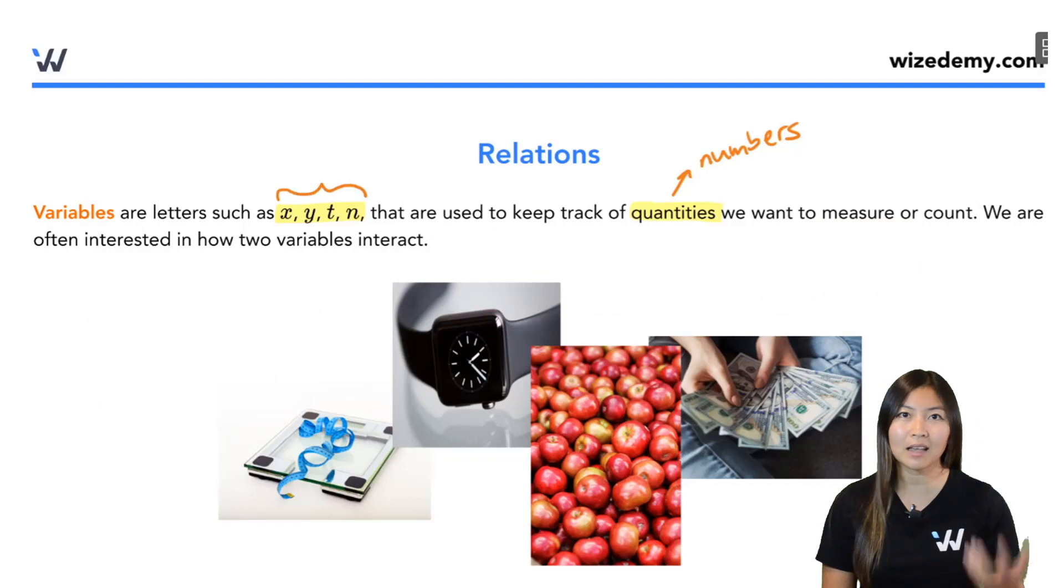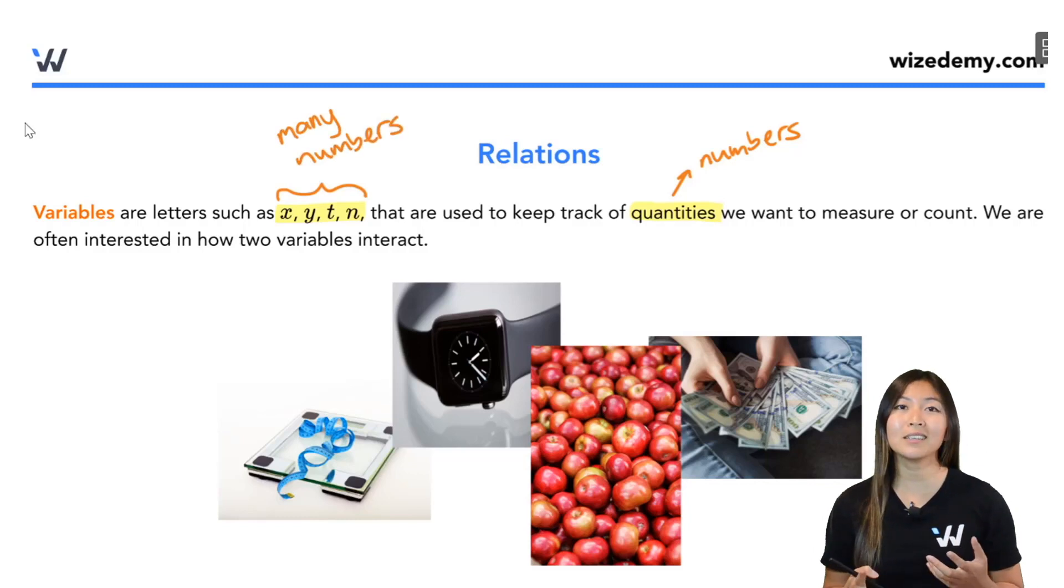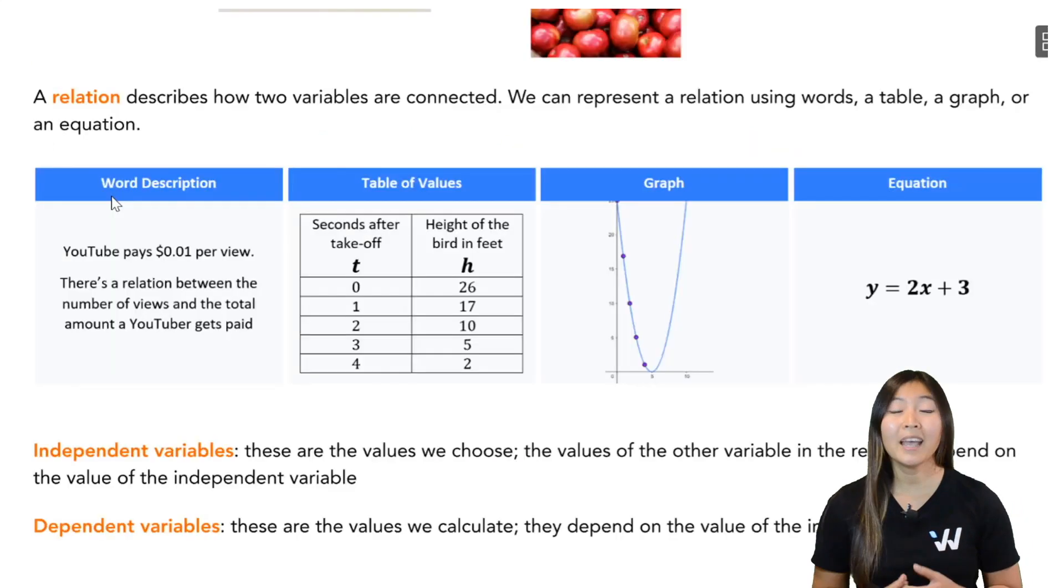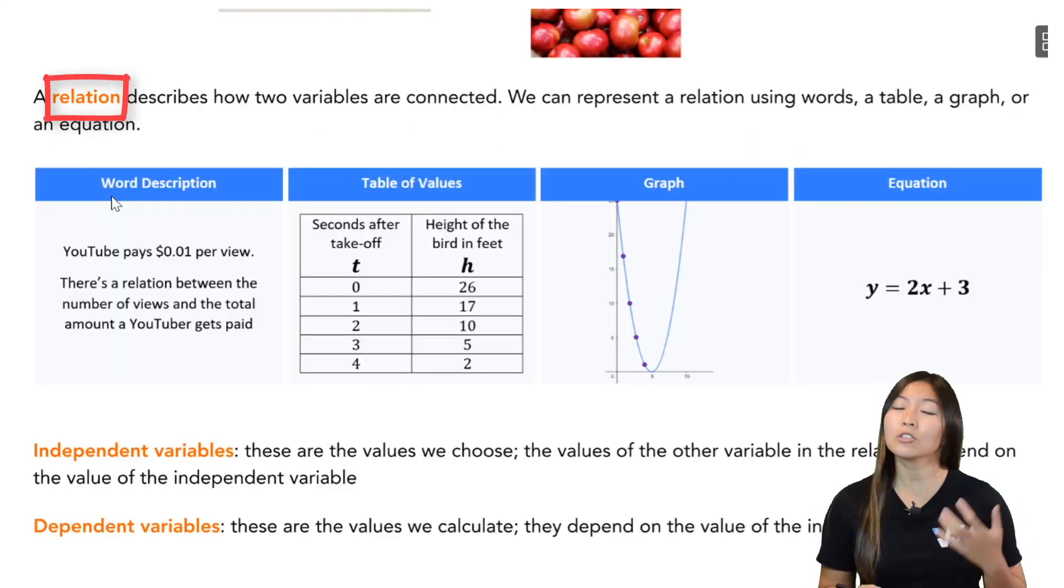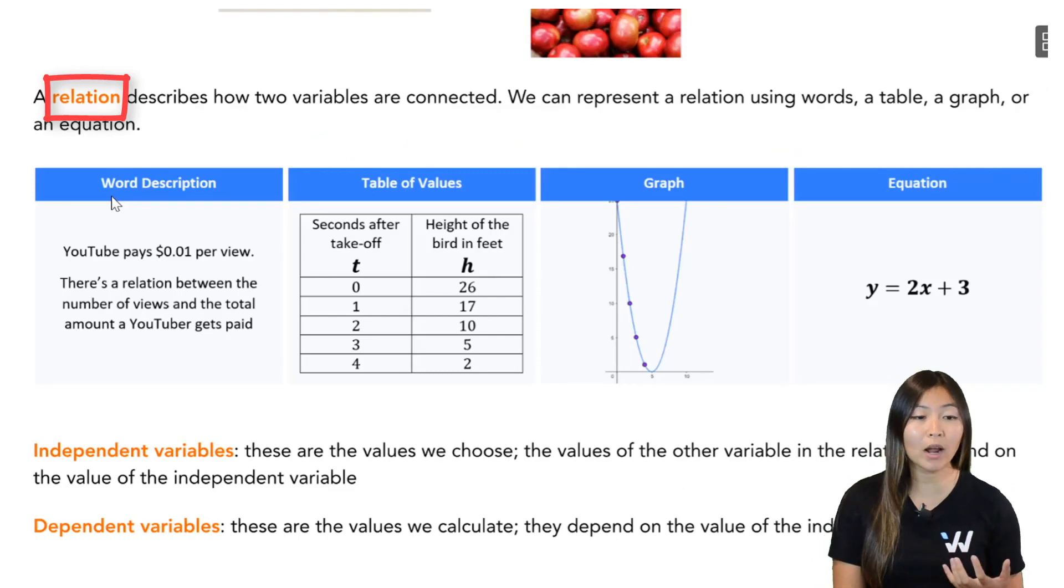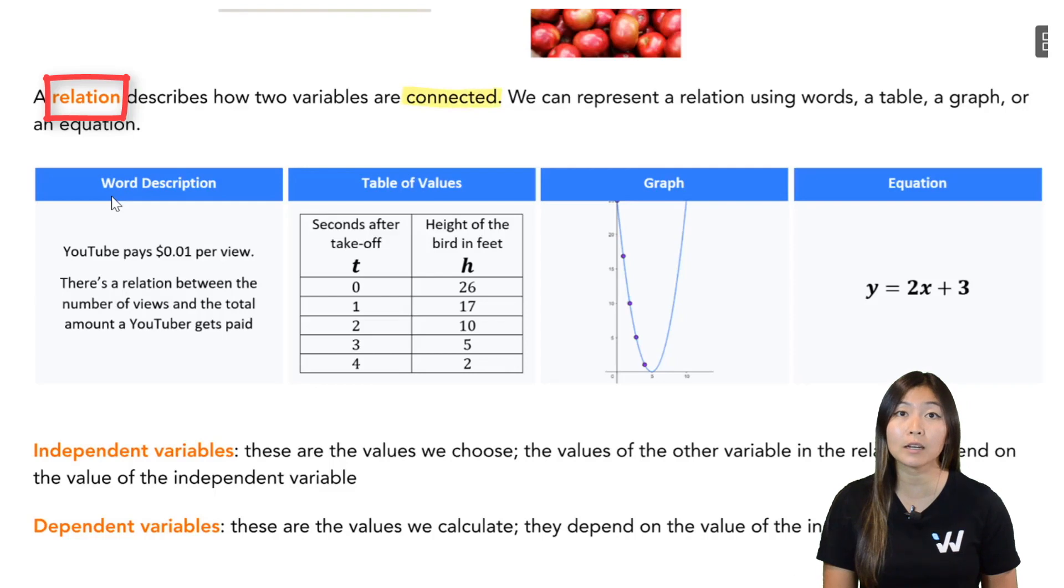So these variables, these x, y, z letters, they don't just take on one number, they take on many different number values. Now we're often interested in how two different variables interact with one another. And how they interact, this is called a relation. So pretty much a relation describes how the two variables interact or how the two variables are connected.